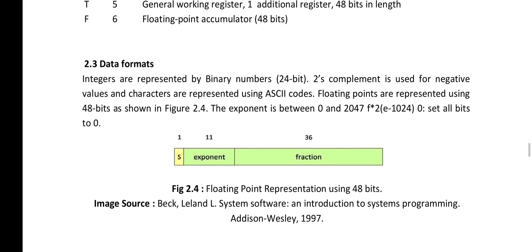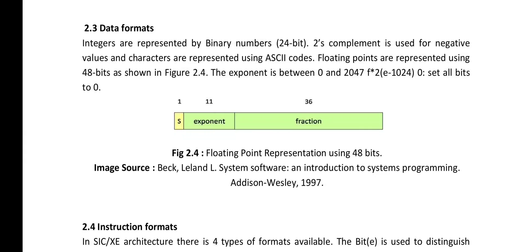Moving on to the third component of SIC XE architecture — the data formats. Integers are represented as 24-bit binary numbers, and 2's complement is used for negative values. Characters are represented using ASCII codes. Floating point values are represented using 48 bits, as shown in figure 2.4. The exponent ranges from 0 to 2047. The S bit consists of 1 bit, the exponent takes 11 bits, and the fractional part takes 36 bits of memory. The key difference between SIC and SIC XE is that floating point representation is supported in SIC XE but not in SIC.